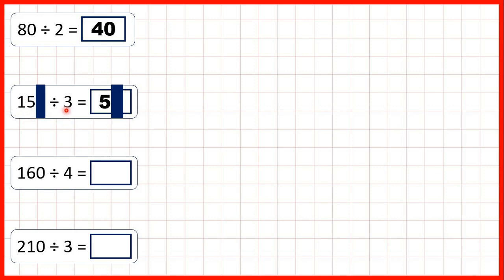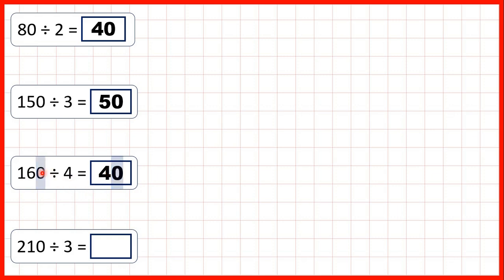That's because 15 divided by 3 is 5, because 5 times 3 is 15. But again, if we have an end zero in our dividend, we need an end zero in our answer as well. Now, 160 divided by 4 — that's 40, because 16 divided by 4 is 4, and then we just need our end zero. And finally, we have 210 divided by 3. Our answer is 70, because 21 divided by 3 is 7, and again, we need an end zero in our answer.